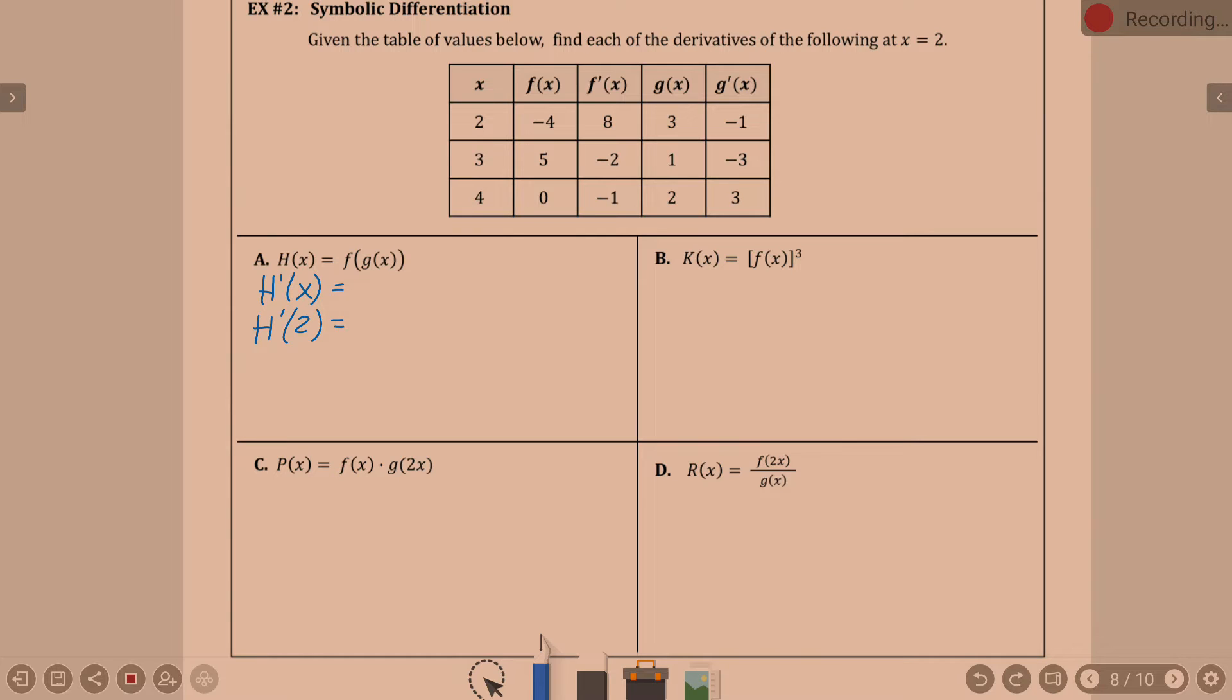h prime of x. Isn't it f prime of g of x? f prime of g of x. Oh, and then it's times g prime. And then times g prime. So, it's the derivative of the outside keeping the inside. So, f prime of g of x. Then times the derivative of the inside. What rule did I just use? Chain rule. Chain rule. Derivative of the outside times derivative of the inside. Chain rule. Now, we can think 2. So, we're going to be doing f prime of g of 2 times g prime of 2. Always start on the inside. So, I'm going to keep f prime. What is g of 2? 3. Times g prime of 2. Negative 1. What is f prime of 3? Negative 2. And negative 2 times negative 1 is? Positive 2.